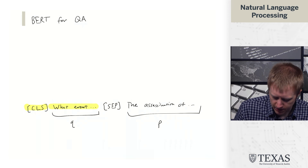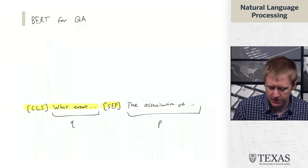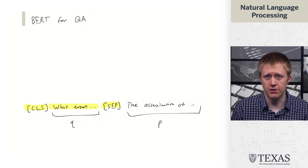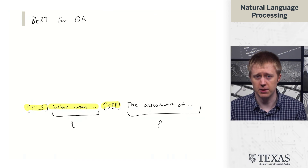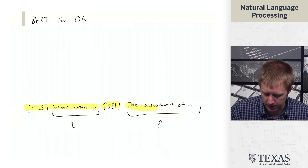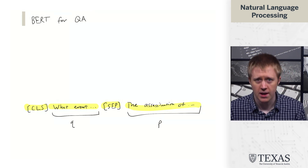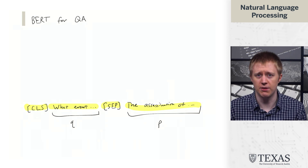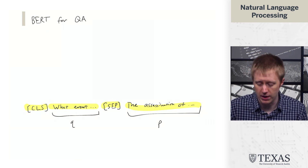Then we have the question, followed by a separator token. For all the sentence pair tasks we looked at for BERT and for the next sentence prediction module, they always separate inputs with a separator token, so that will be part of the input here. Then we have the passage, which again can be quite long.